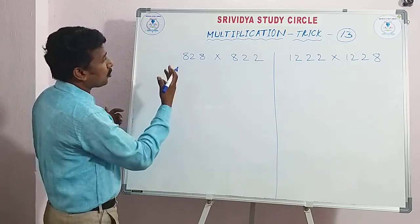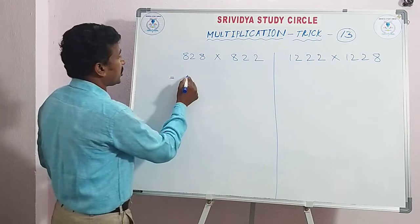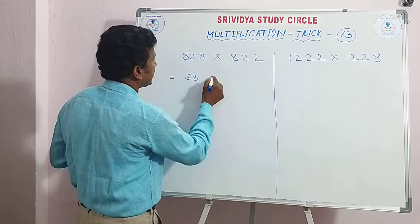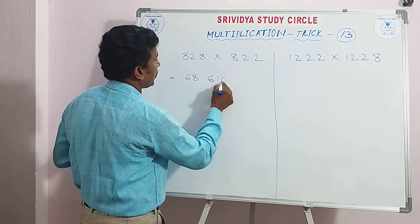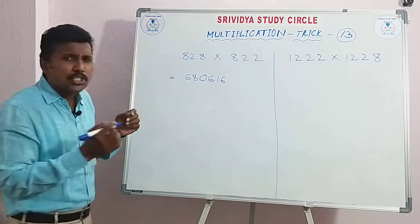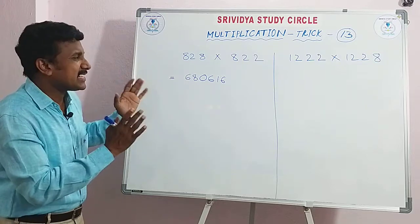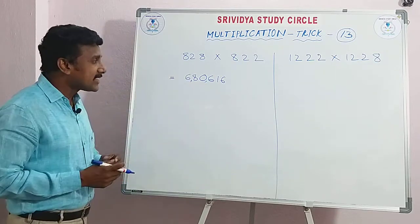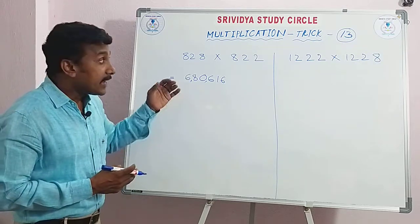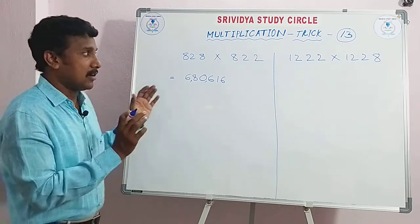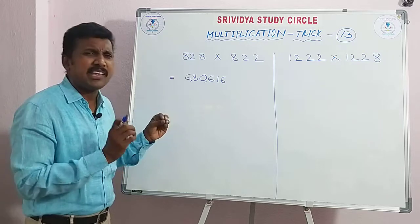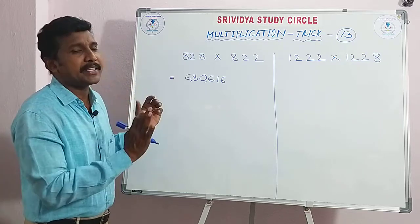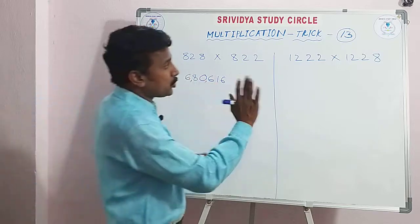For example, I am doing 828 × 822: 64 plus 4 is 68, and this gives 680,616. Yes, within a few seconds — under 10 seconds — you can get this answer. This is six lakh eighty thousand six hundred and sixteen. This multiplication trick is very easy.